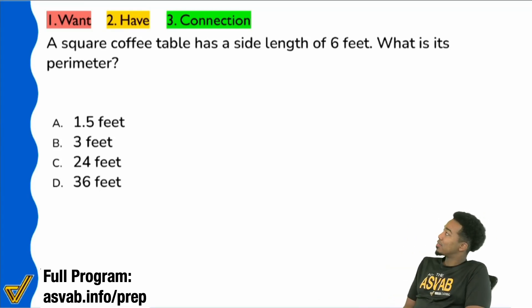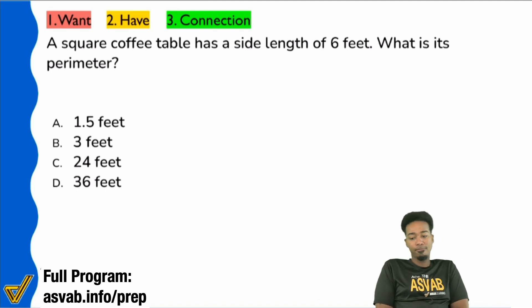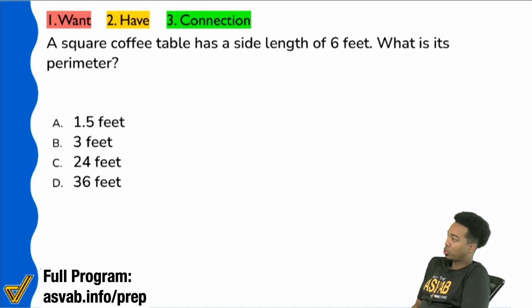A square coffee table has a side length of six feet. What is its perimeter? Let's go ahead and start this question off.